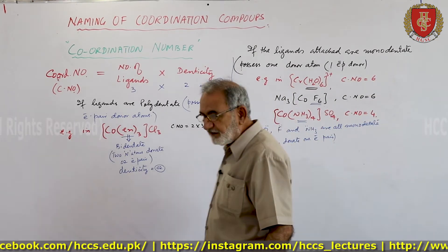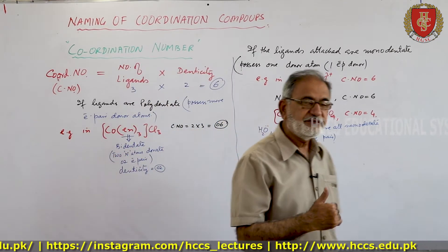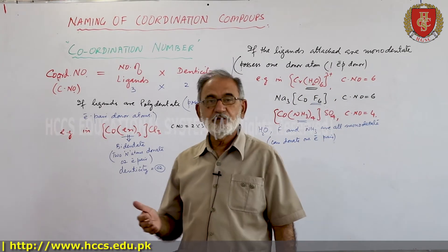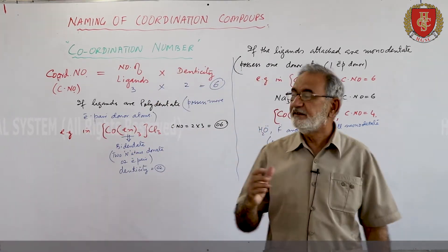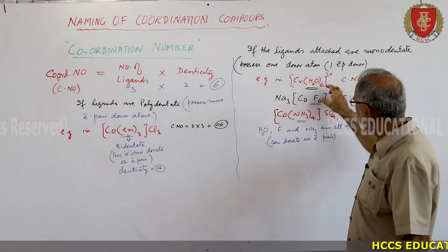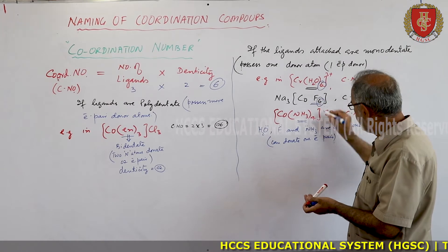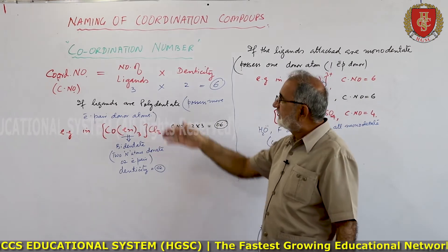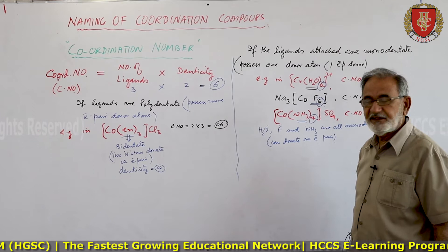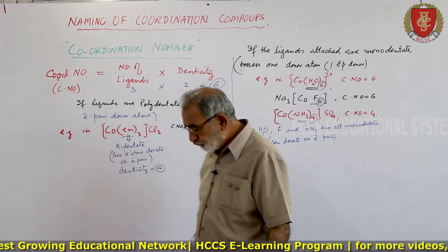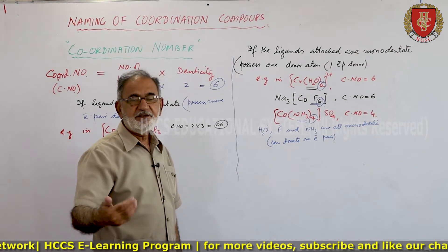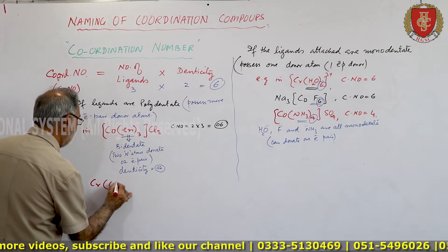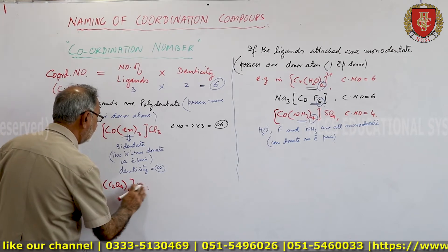The coordination number depends on the number of ligands surrounding the central metal atom and the electron pairs they donate to form coordinate covalent bonds. For monodentate ligands, the coordination number equals the number of ligands. For polydentate ligands — which donate two, three, four or more electron pairs — the coordination number changes accordingly.